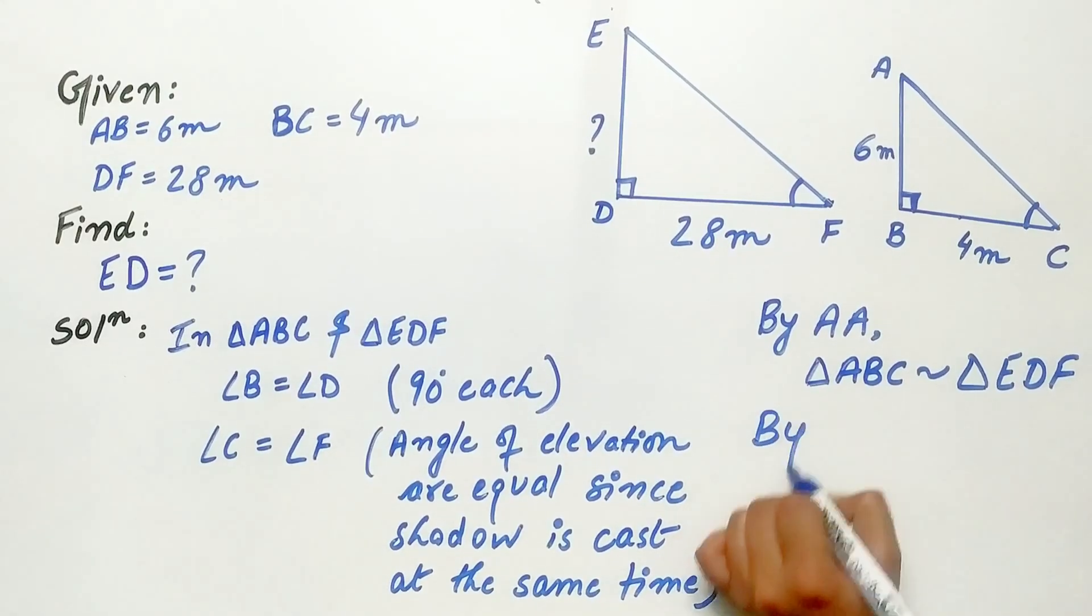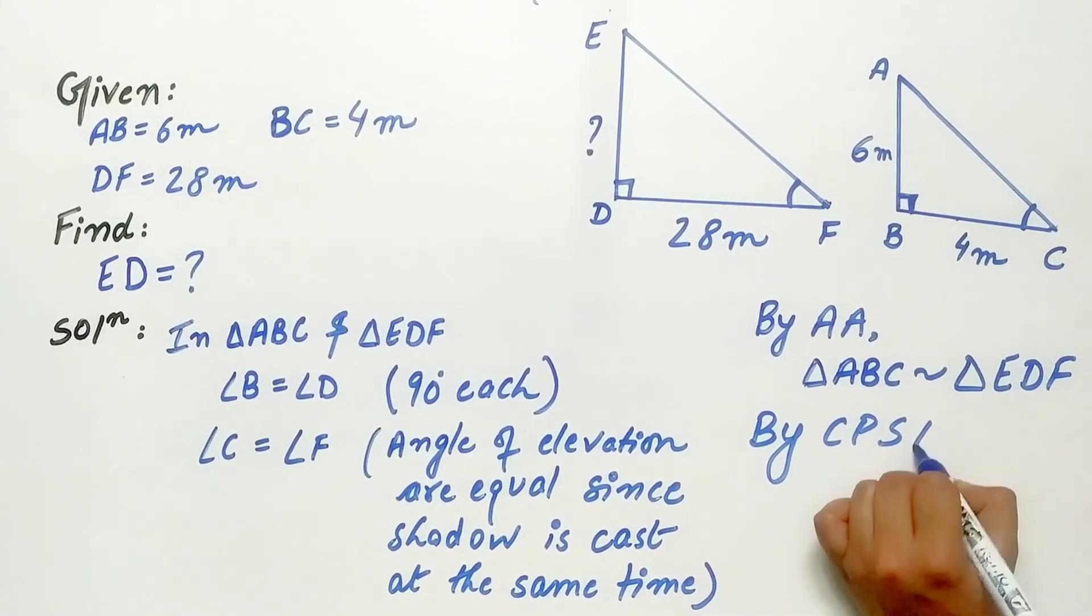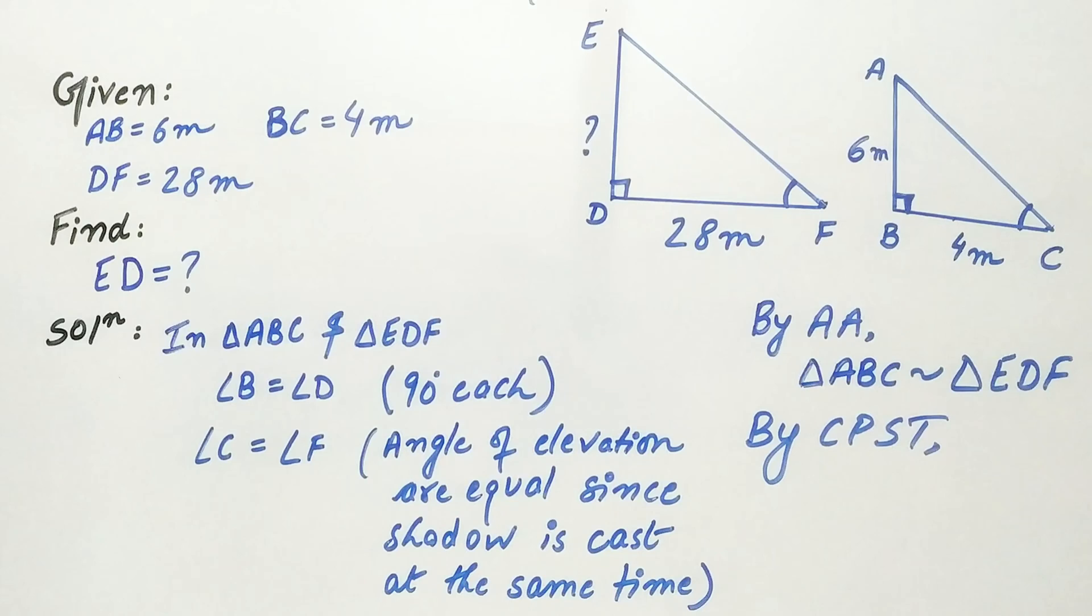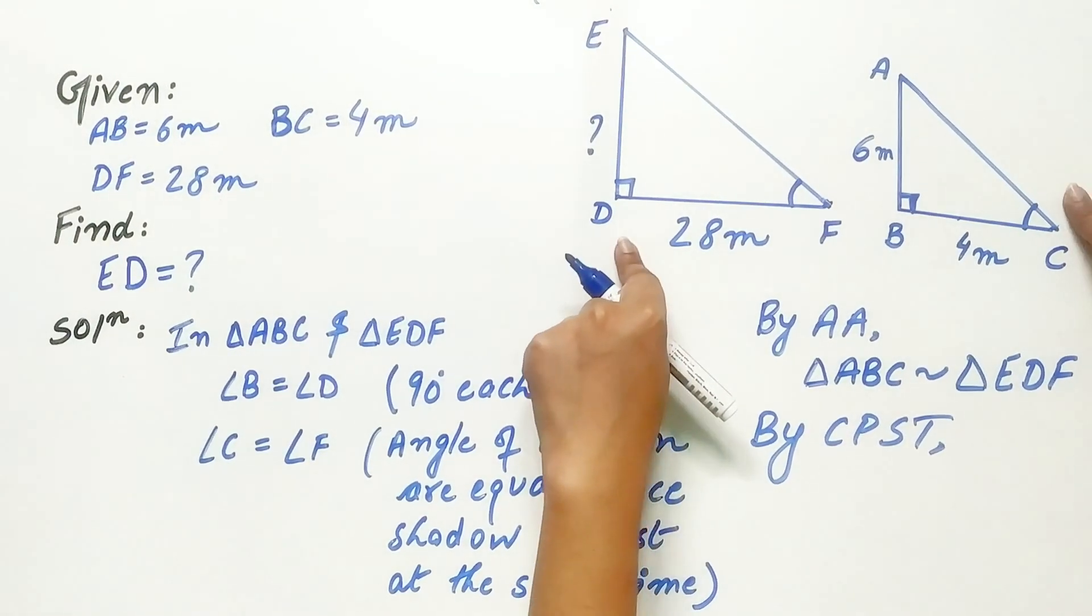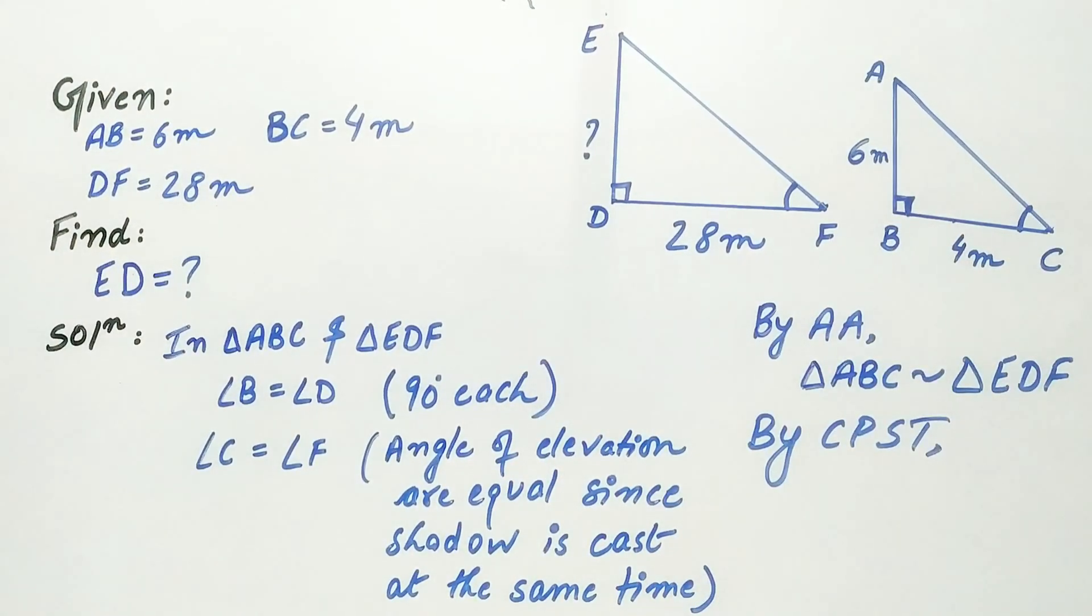And by CPST that is corresponding parts of similar triangles, the ratios of the sides are in proportion.